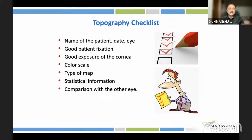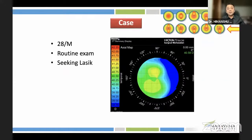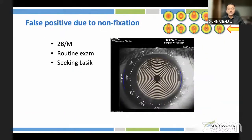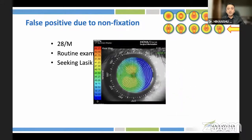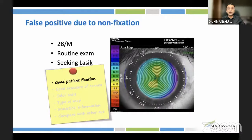Whenever we look at topography, there are certain checklists: patient details, good fixation, good exposure, color scale, whether the map is proper, and comparing with the other eye. For example, a young male sent for LASIK — the pattern looks keratoconic. But looking at the raw data, the centration is not proper; it's a false positive due to poor fixation. Once fixation is corrected, the topography becomes regular and the patient is possibly suitable for LASIK.